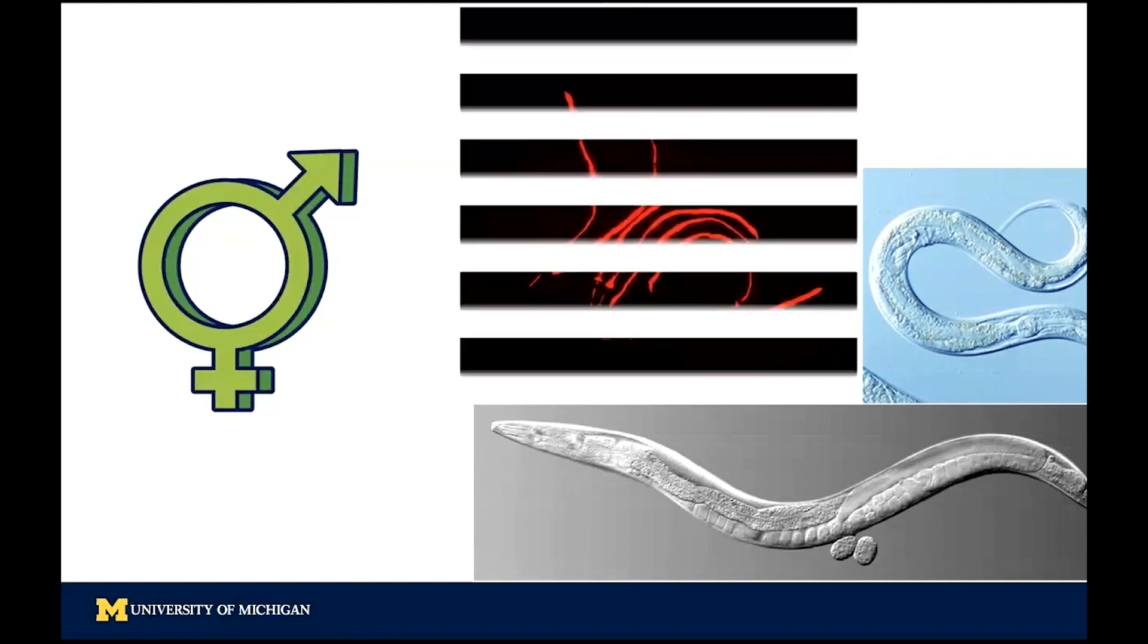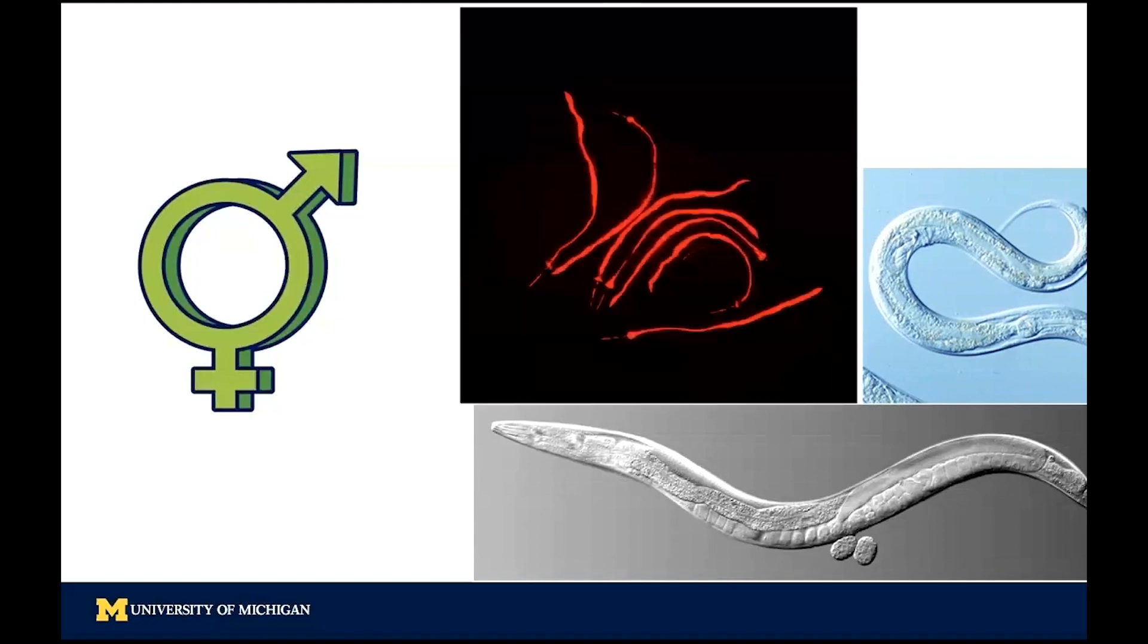Here is one example of an image we produce in lab. The glowing means that a specific gene is expressed in this worm.